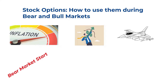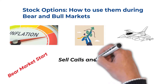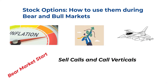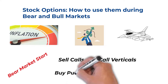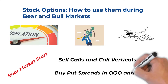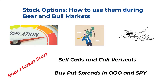Preferably, I sell calls and call vertical spreads during this time if IV is high. However, when the market is at highs, IV is often low, so I'll hedge by buying some put spreads in the indexes such as the Qs and SPY.